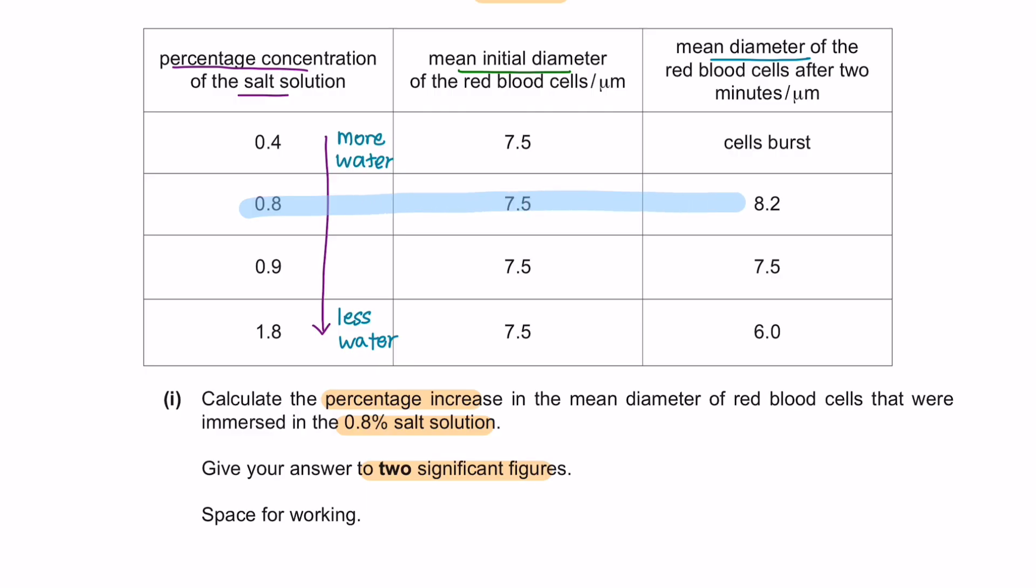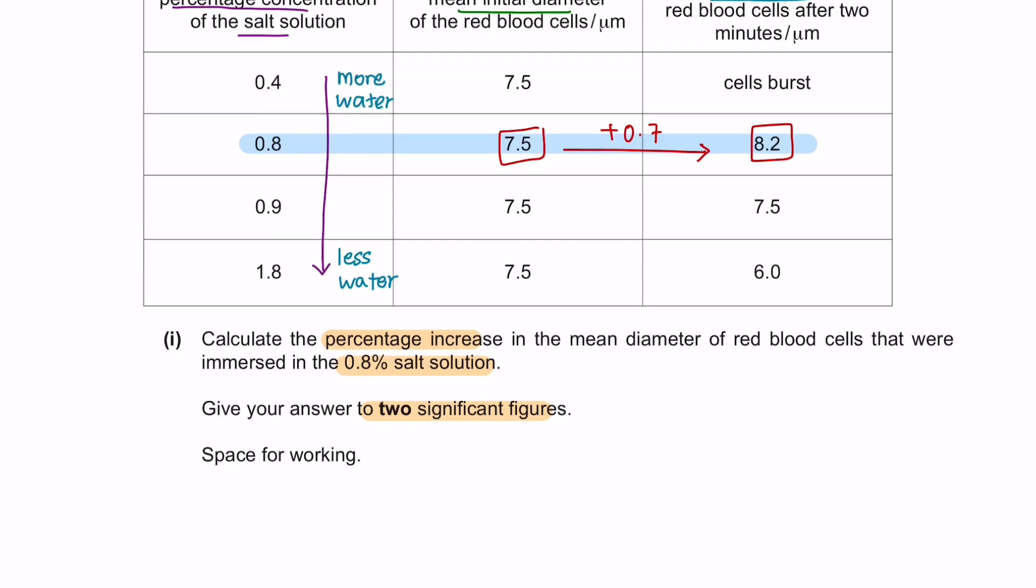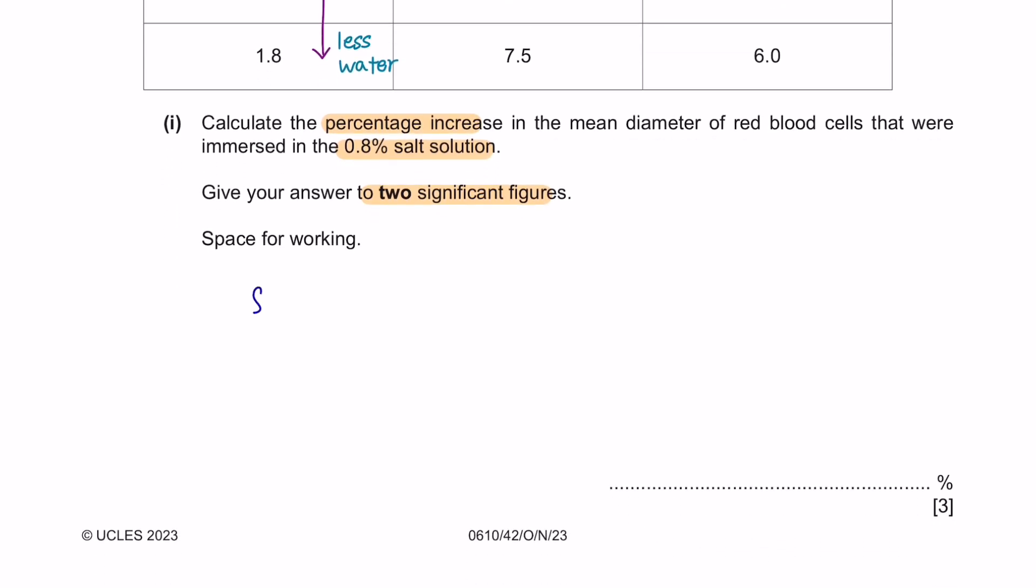For 0.8% of salt concentration, the mean diameter has increased by 0.7 micrometers. So let's find its percentage of increase. So it increased to 8.2 and will minus with the actual mean diameter over the actual value times 100%. And we'll get a value on our calculator of 9.333. So converting these into 2 significant figures, the final answer would be 9.3%.